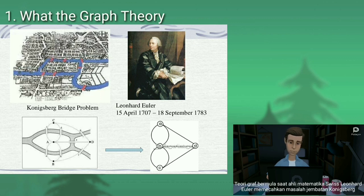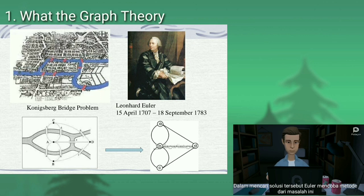The graph theory originates when Swiss mathematician Leonhard Euler solved the Königsberg bridge problem. In searching for the solution, Euler tried to solve the problem by forming a model of the Königsberg bridge known as the multigraph.